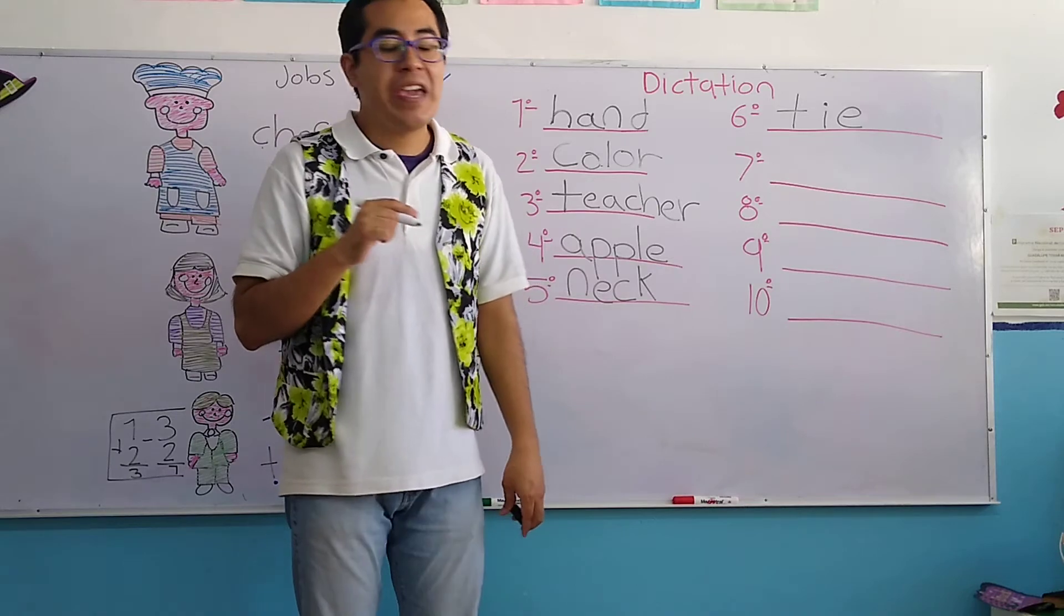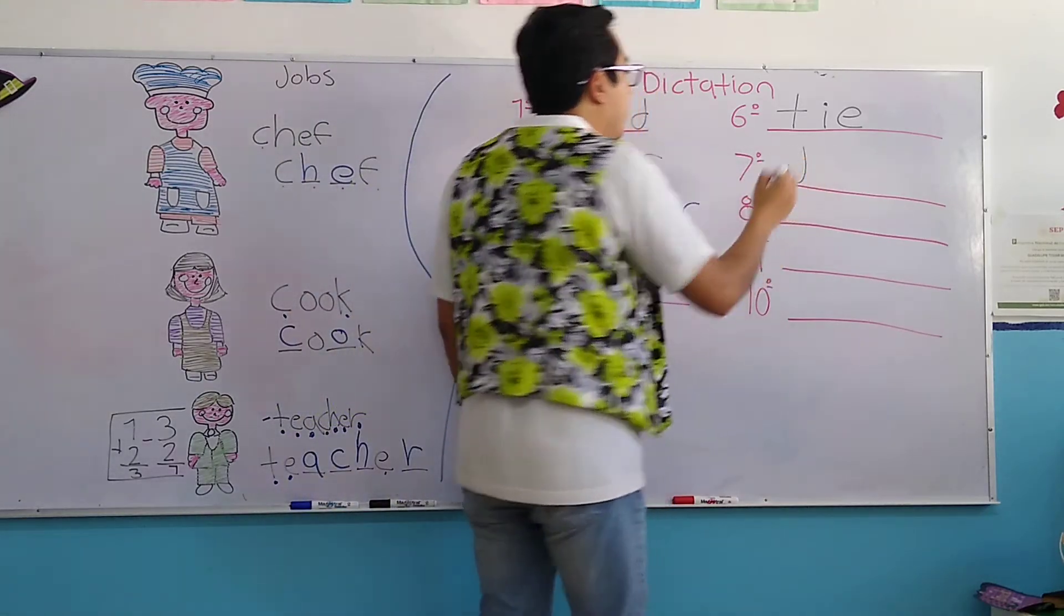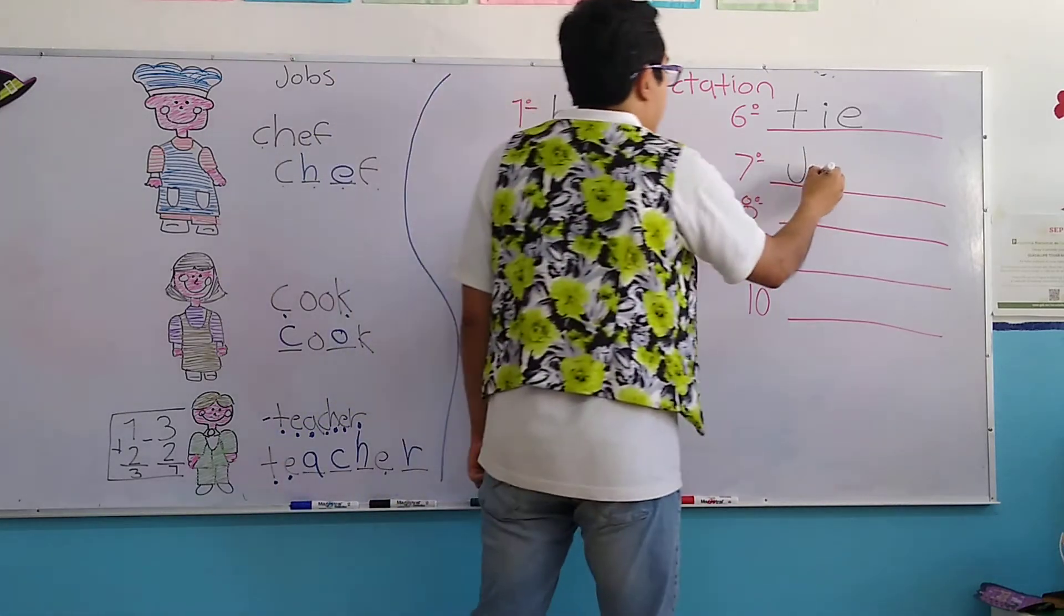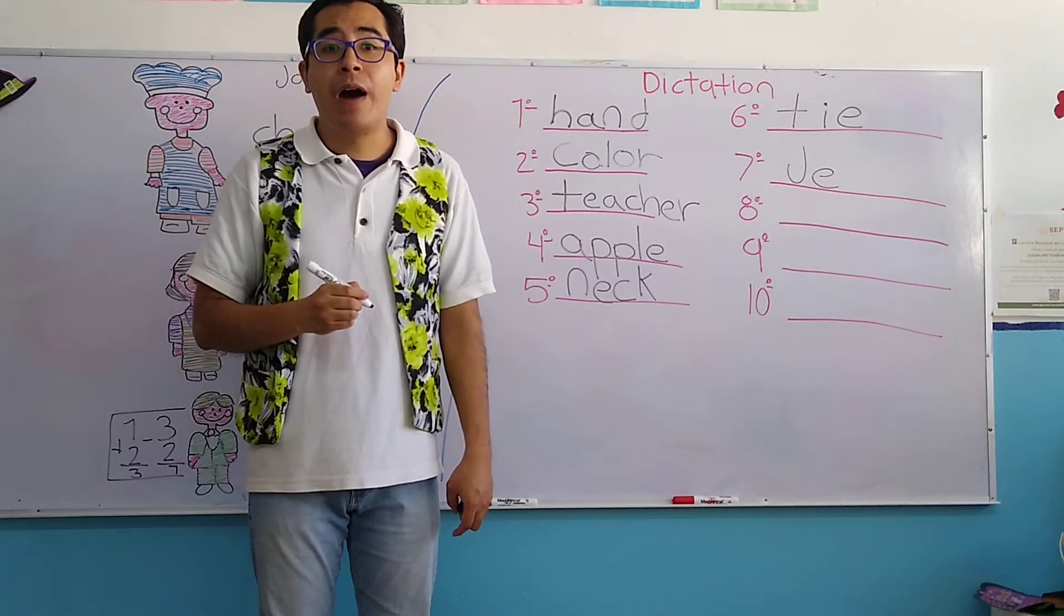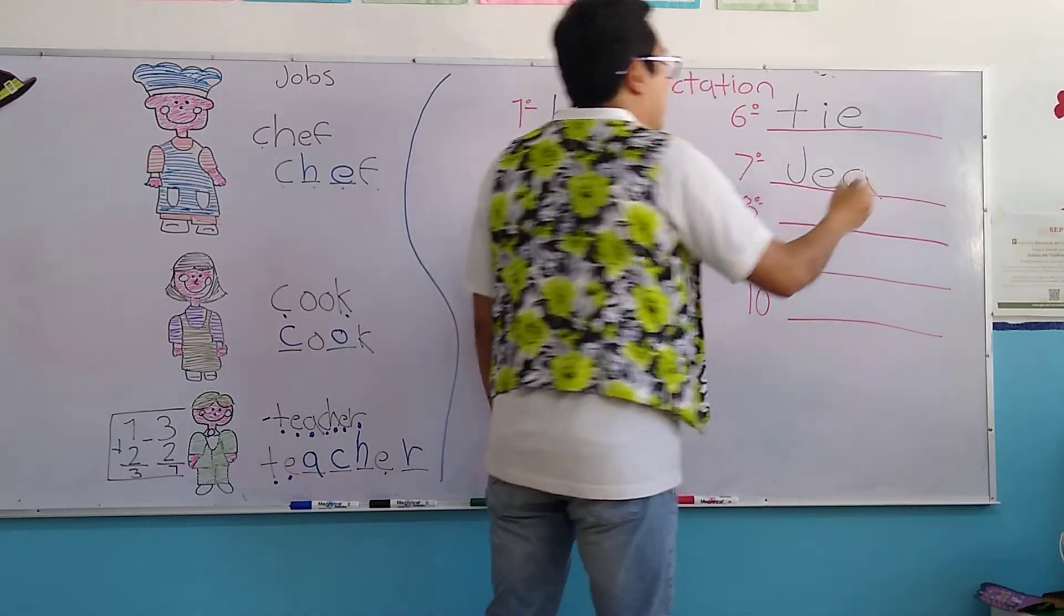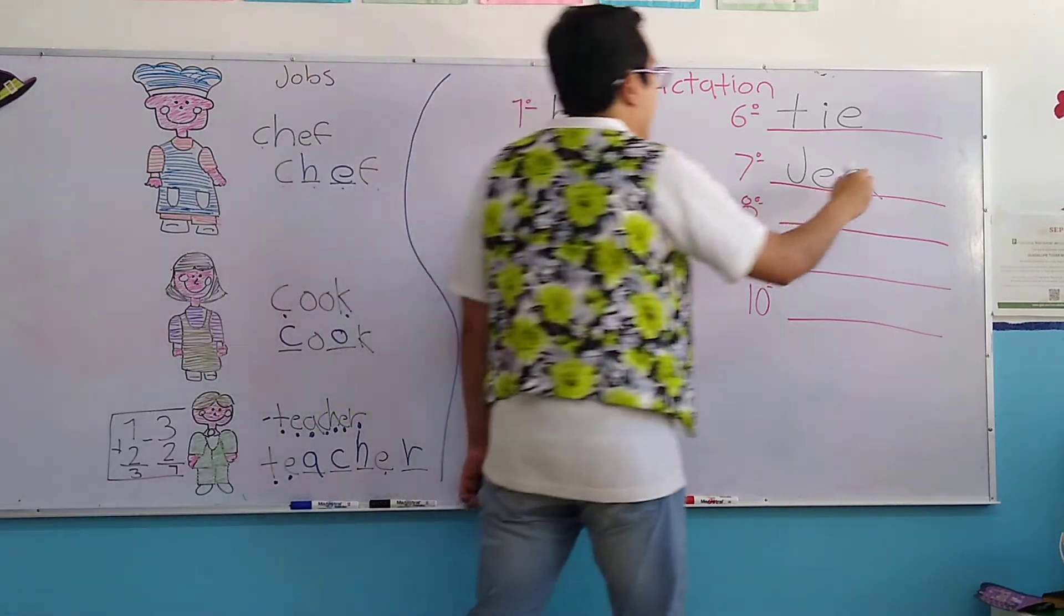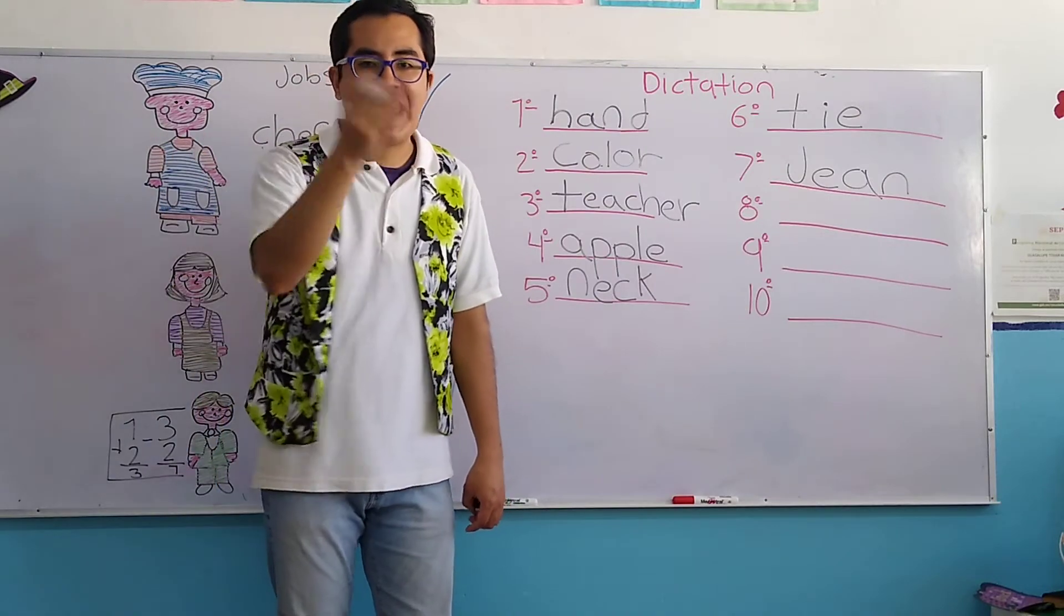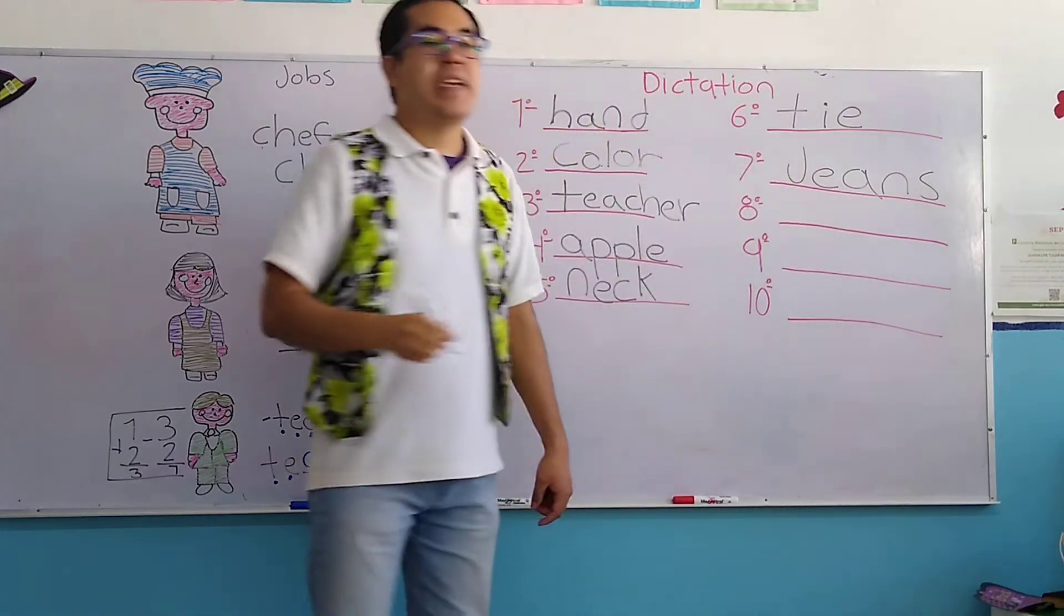We start with the letter J of Jacob, like the teacher. Letter E of Enrique. Letter A of Alan of Apple. Letter N of Nurse of Nicole. And letter S of Snake. And the word is jeans.